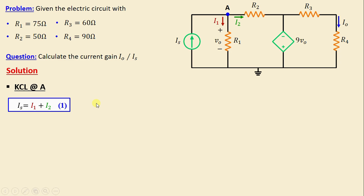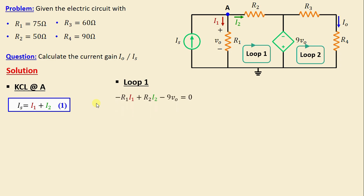Let's move on to Kirchhoff's voltage law. We define Loop 1 and Loop 2. Applying KVL in Loop 1, we write: −R1·I1 + R2·I2 − 9·Vo = 0. According to Ohm's law, Vo = R1·I1.